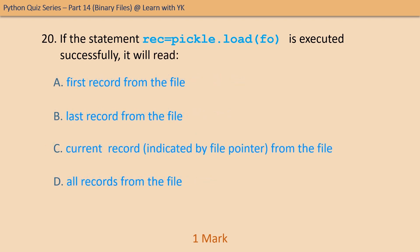Question number twenty: if the statement rec = pickle.load(fo) is executed successfully, it will read — find out the correct option. The correct option is option C — it will read the current record as indicated by the file pointer from the file.